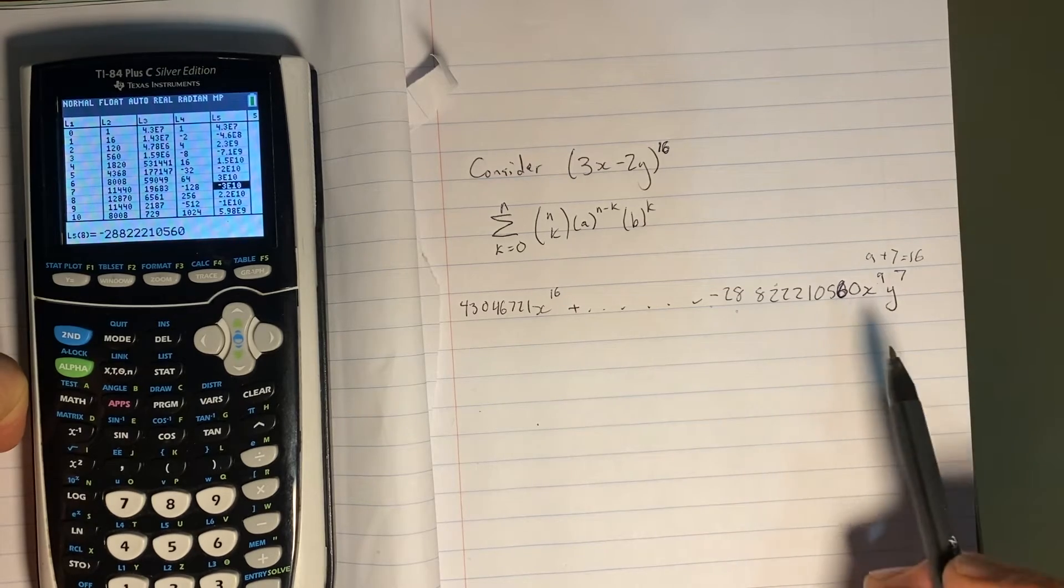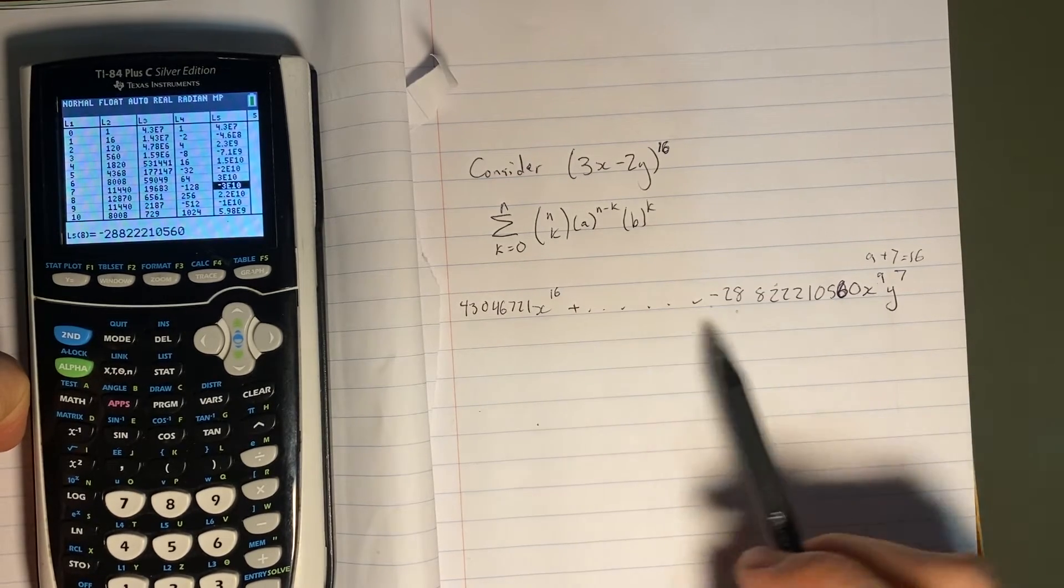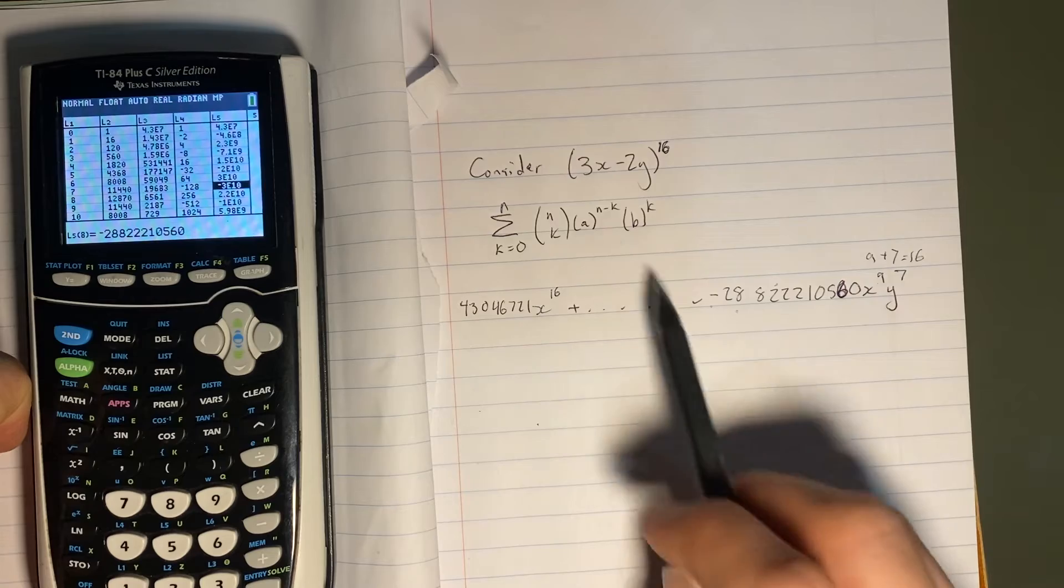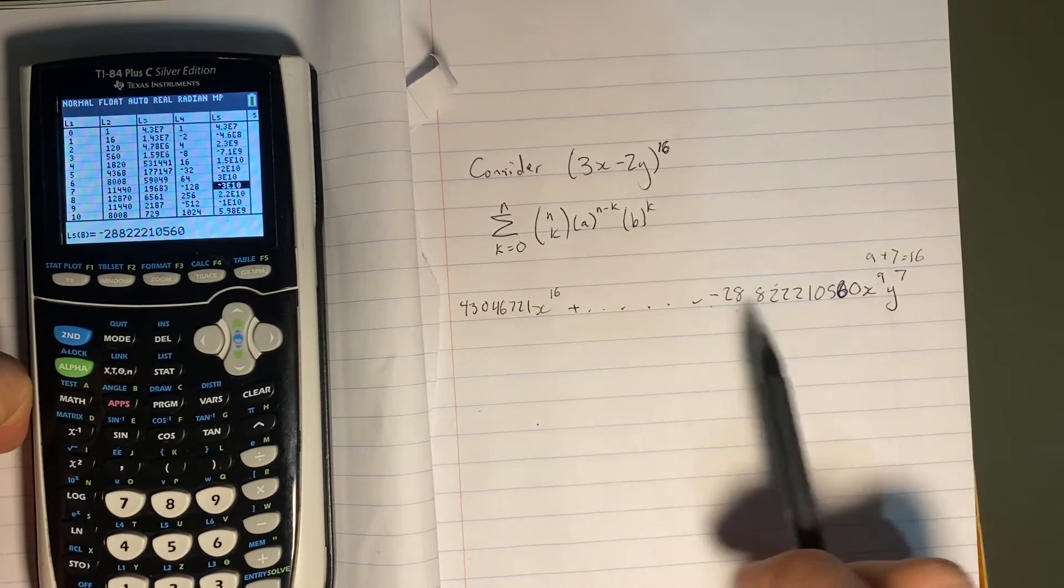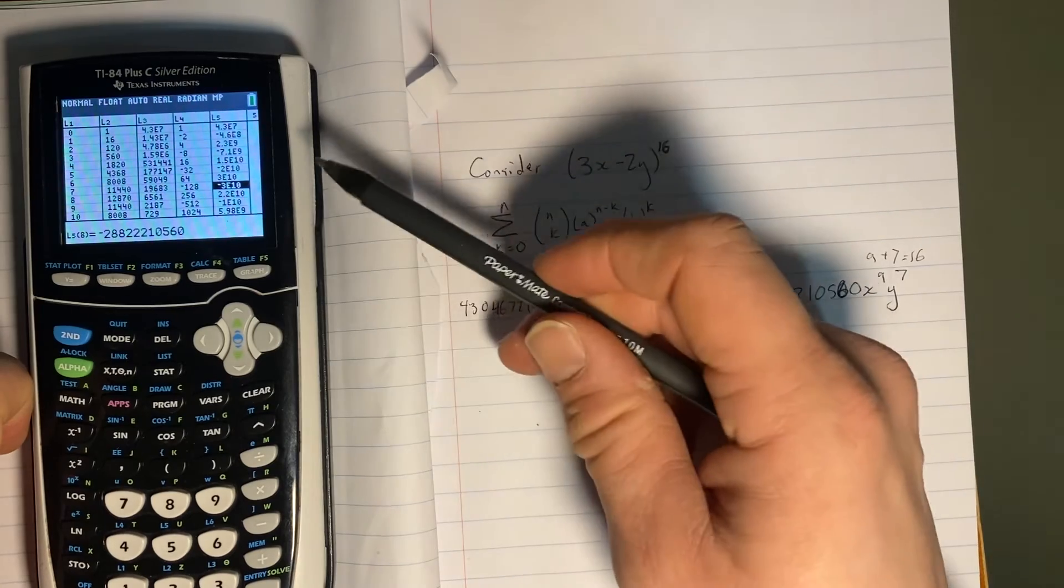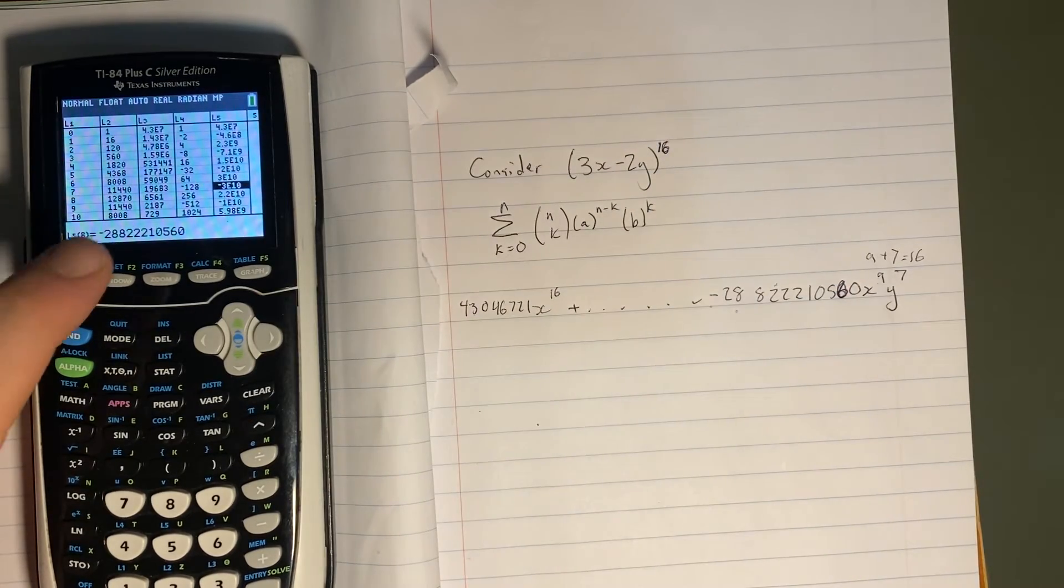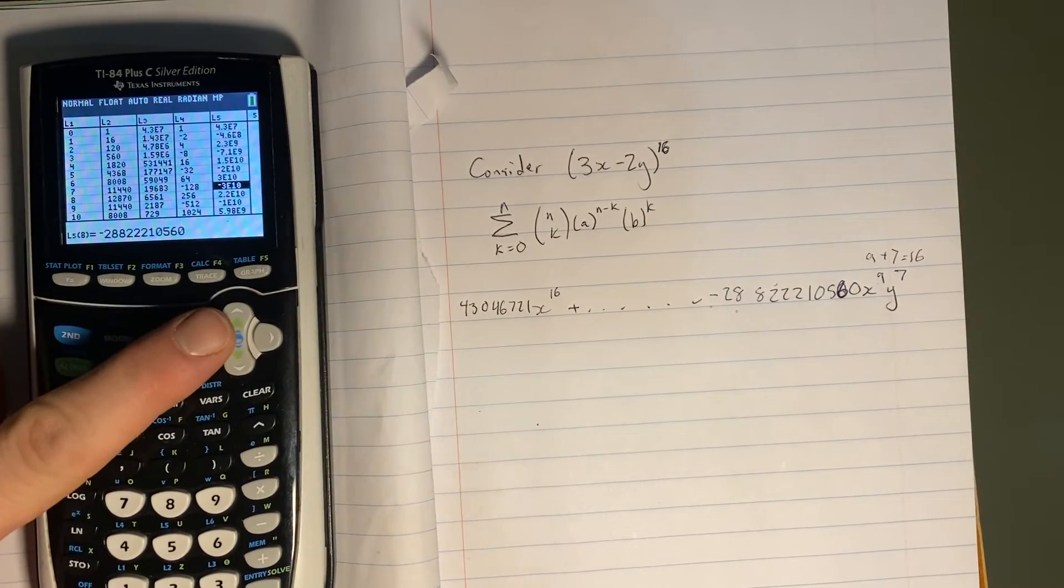So in this way, I can go about calculating all of my coefficients of an entire expansion. I could list the whole thing out if I wanted. Or I could just say which ones I wanted to find. So this is a unique way to use your table. So that way you can find your coefficients.